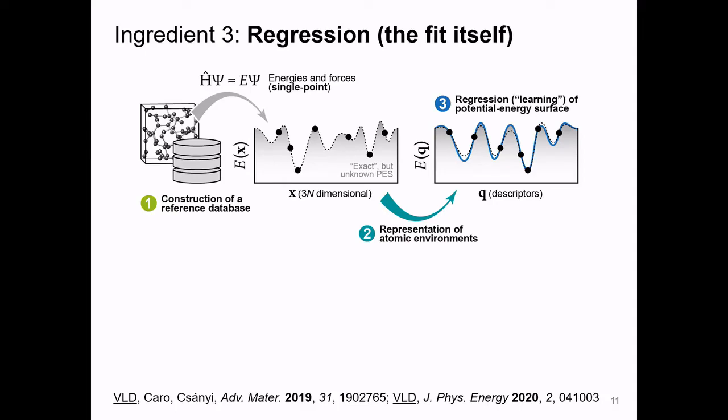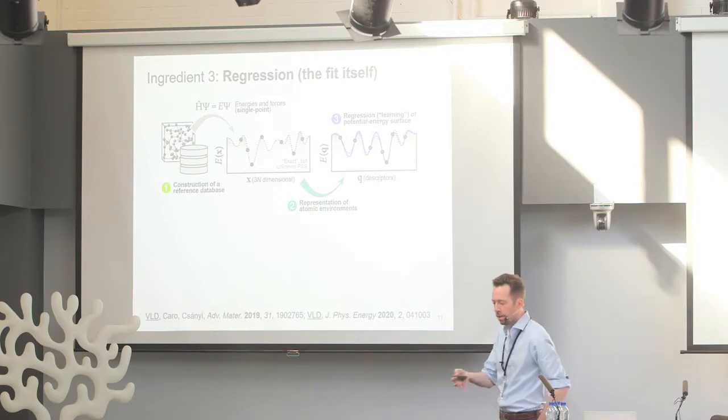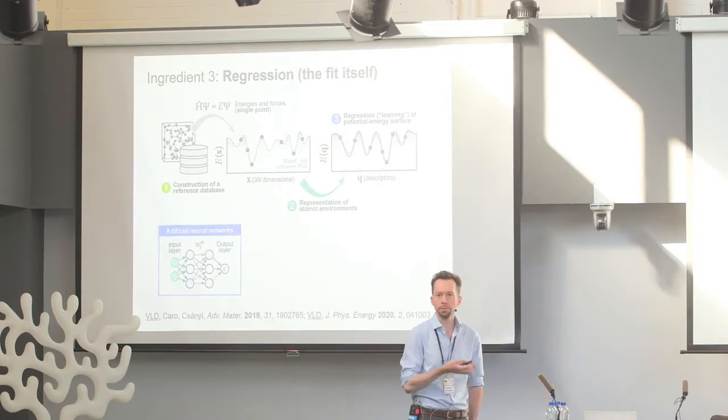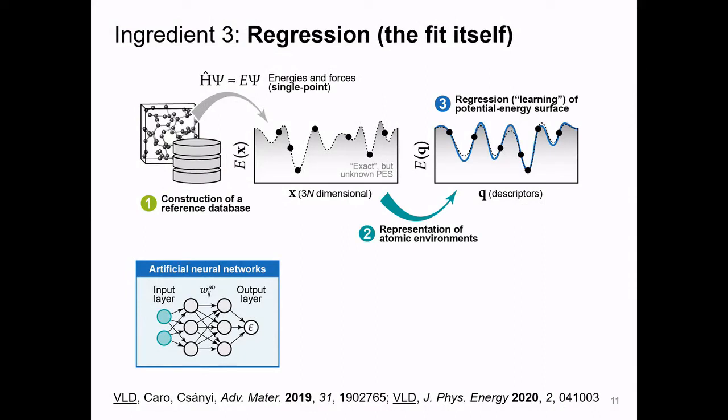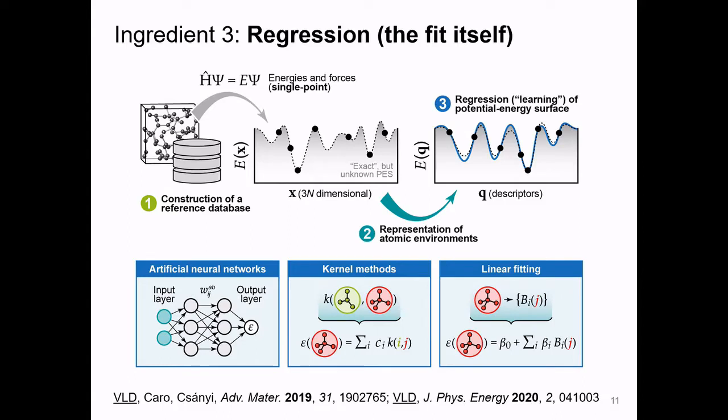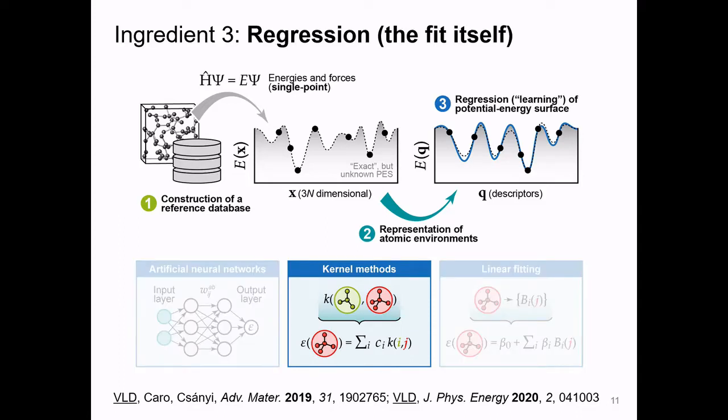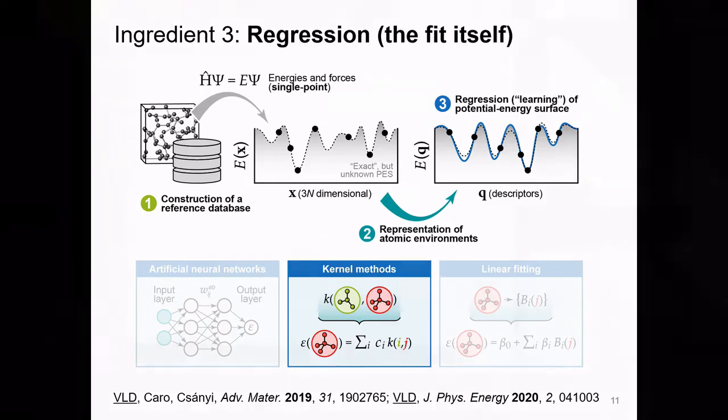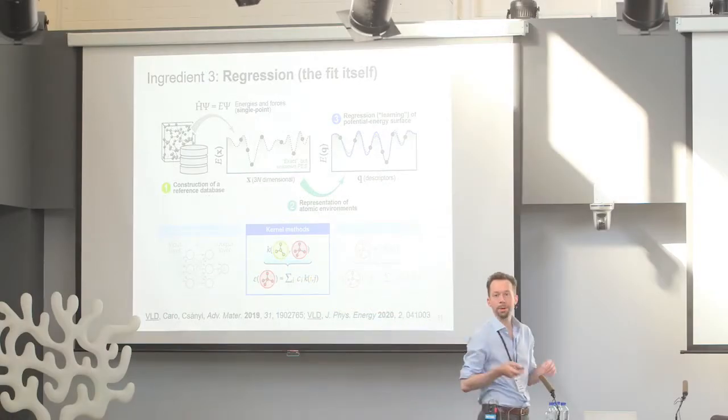The regression, that's the last of the three ingredients that you need, and of course there's many successful methods out there. The three main categories: artificial neural networks introduced by Jörg Behler and others, kernel methods based on similarity measures between atoms, and then linear-fitted models, MTPs, snaps. We've seen a little bit of MTPs yesterday. All I'm going to talk about today is done, of course, with GAP, which is a kernel method. So the idea of comparing atomic environments, that's this kernel function k. That's quite intuitive. It gives you a measure between zero and one, how similar two environments are. And what I need now is this coefficient here. So how do I get those?